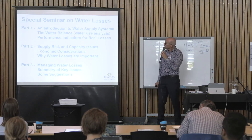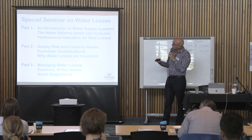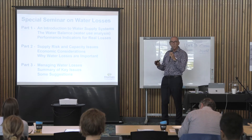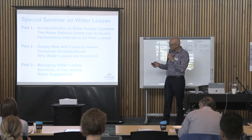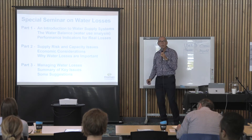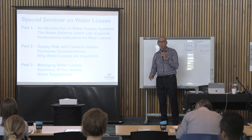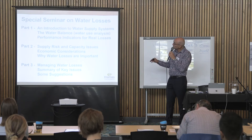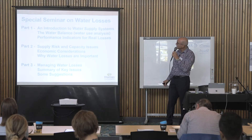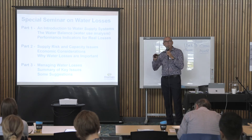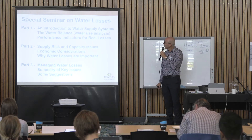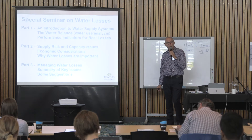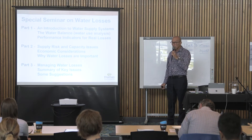Part one: I wanted this to be understandable for a layperson about water losses and the problem with percentages. I'm starting with a pretty general introduction to water supply systems, so it'll be pretty familiar to people in the room, but for others watching it might not be. I'll talk about the water balance, which explains where the water goes once it leaves the water treatment plant, and then talk about performance indicators for real water losses and mainly why percentages can be so misleading.